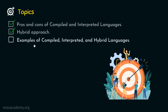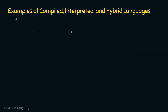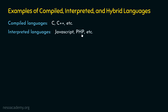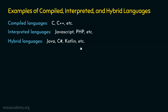Now let's see some examples of compiled, interpreted and hybrid languages. Examples of compiled languages are C and C++. Interpreted languages include JavaScript and PHP. Hybrid languages include Java, C-sharp, and Kotlin. So those are examples of compiled, interpreted and hybrid languages.